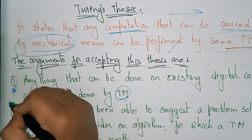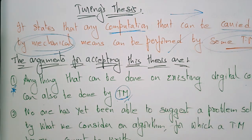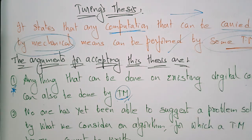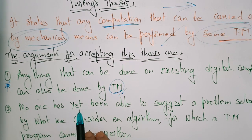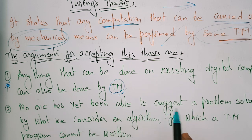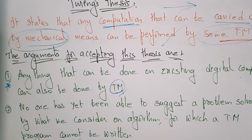So this is how efficient the Turing machine is — anything that can be done on an existing digital computer can also be done in a Turing machine. And no one has been able to suggest a problem solvable by what we consider algorithms for which a Turing machine program cannot be written.